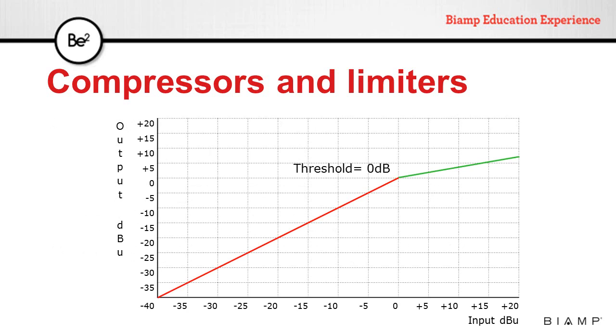Not only increasing the ratio can reduce the dynamic range of the signal, reducing the threshold can do the same. Note that only the loudest portion of the signal will be affected. The resulting signal after the compressor will be farther away from the system peak level.